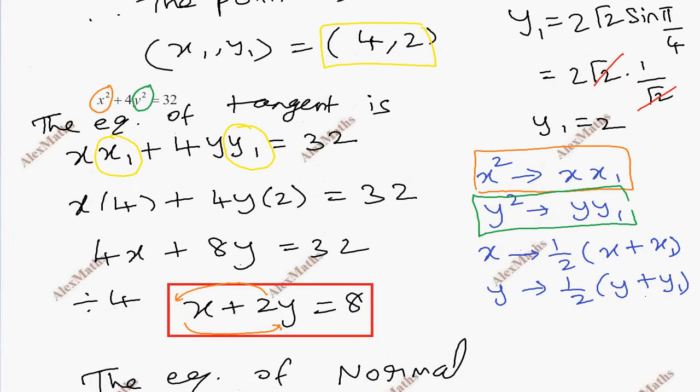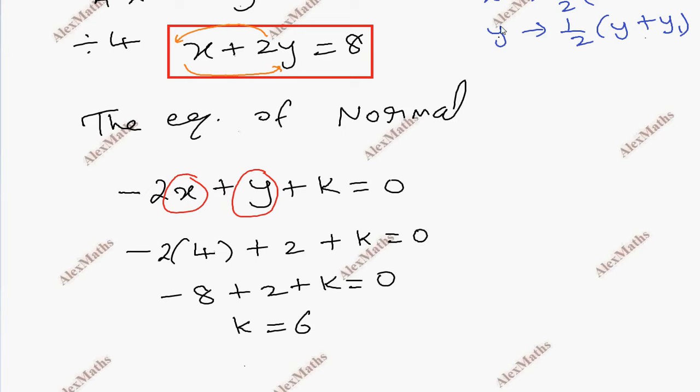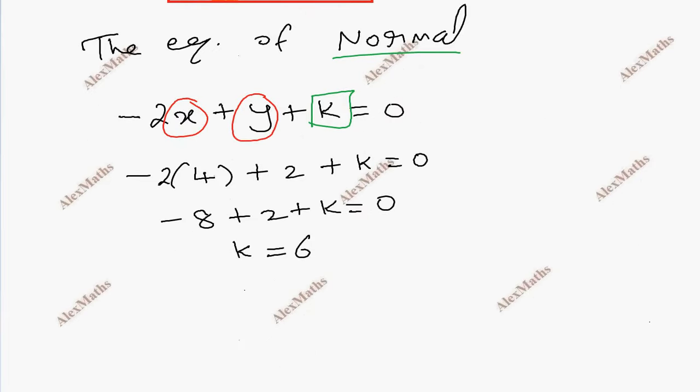Substitute (4, 2): 2(4) + 2 + k = 0. So 8 + 2 + k = 0, therefore k = -10. We can write this as 2x - y - 6 = 0.